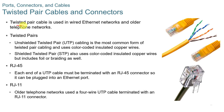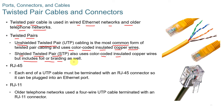Twisted pair cable is used in Ethernet networks and older telephone networks. There are two types: Unshielded Twisted Pair (UTP), which is the most common, uses color-coded insulated copper wires with no shielding. Shielded Twisted Pair (STP) includes foil or braiding around the wires under the plastic sheathing, protecting against EMI, or electromagnetic interference. We'll cover this in more detail in the networking chapter.